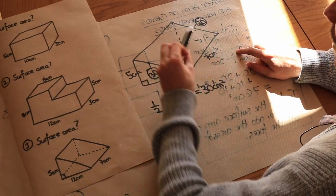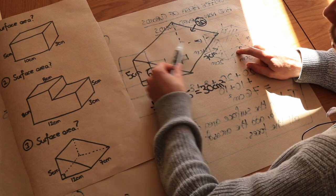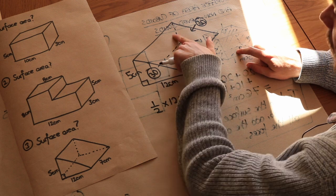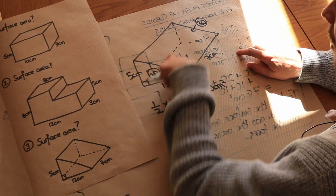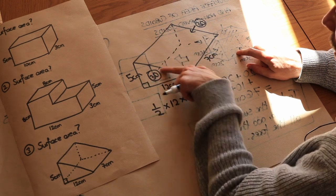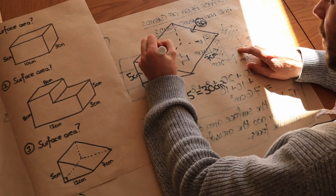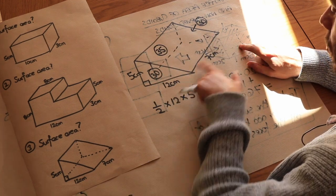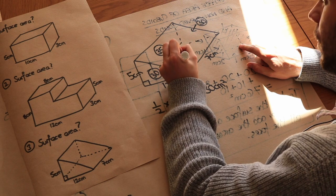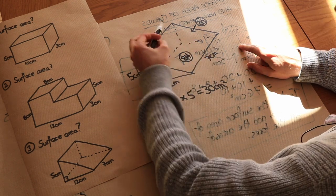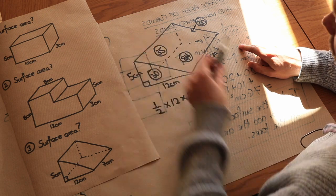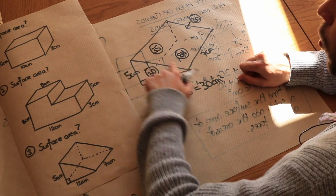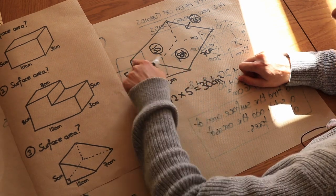The prism has three rectangular faces. The back rectangle has length 7 and height 5, so that's 5 times 7, which is 35. The bottom face is 12 times 7, which is 84 centimetres squared. For the sloped face, we know the length is 7, but we need to find the sloped width using Pythagoras on the triangular face, where the two shorter sides are 5 and 12, and the hypotenuse is x.